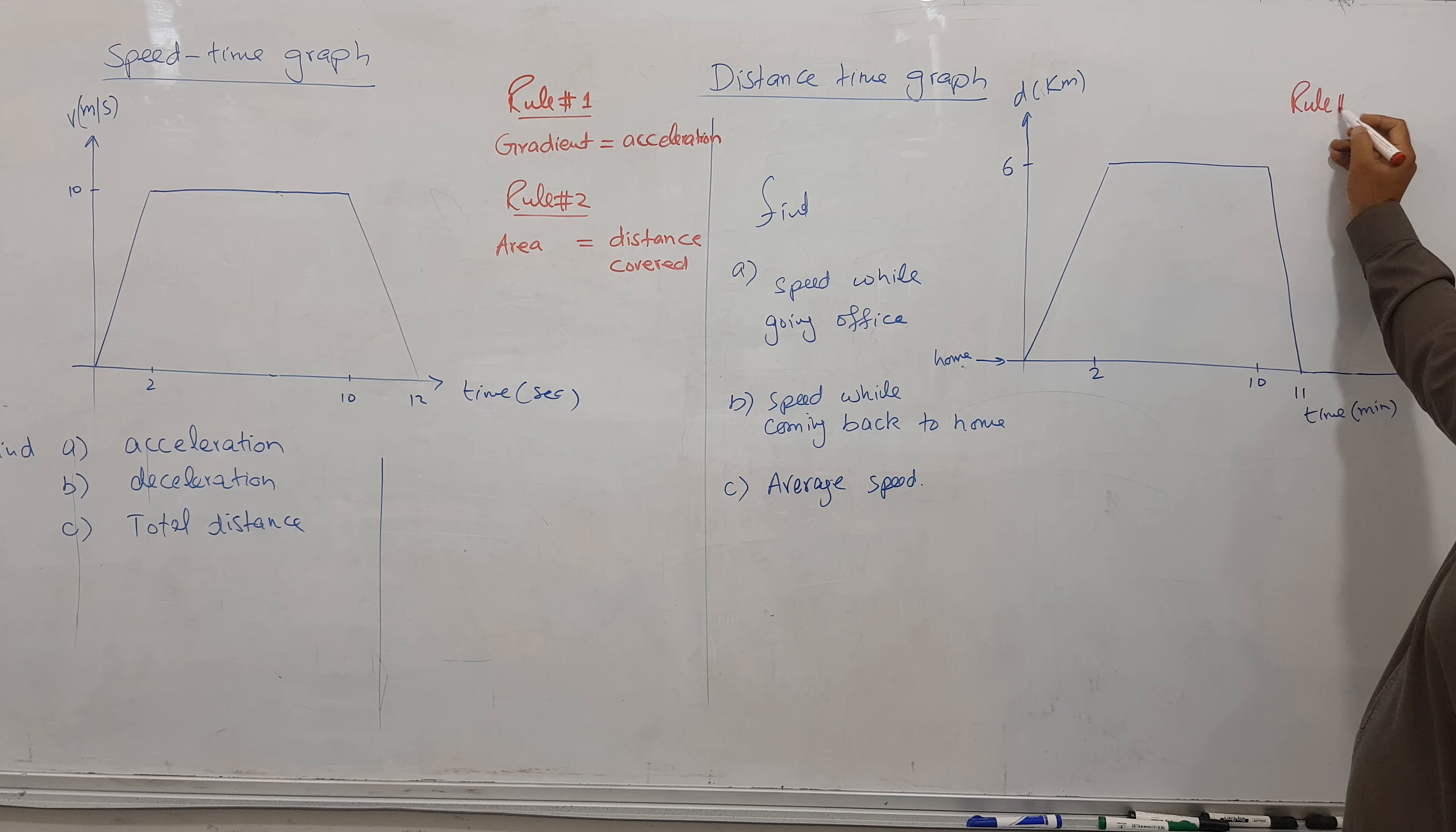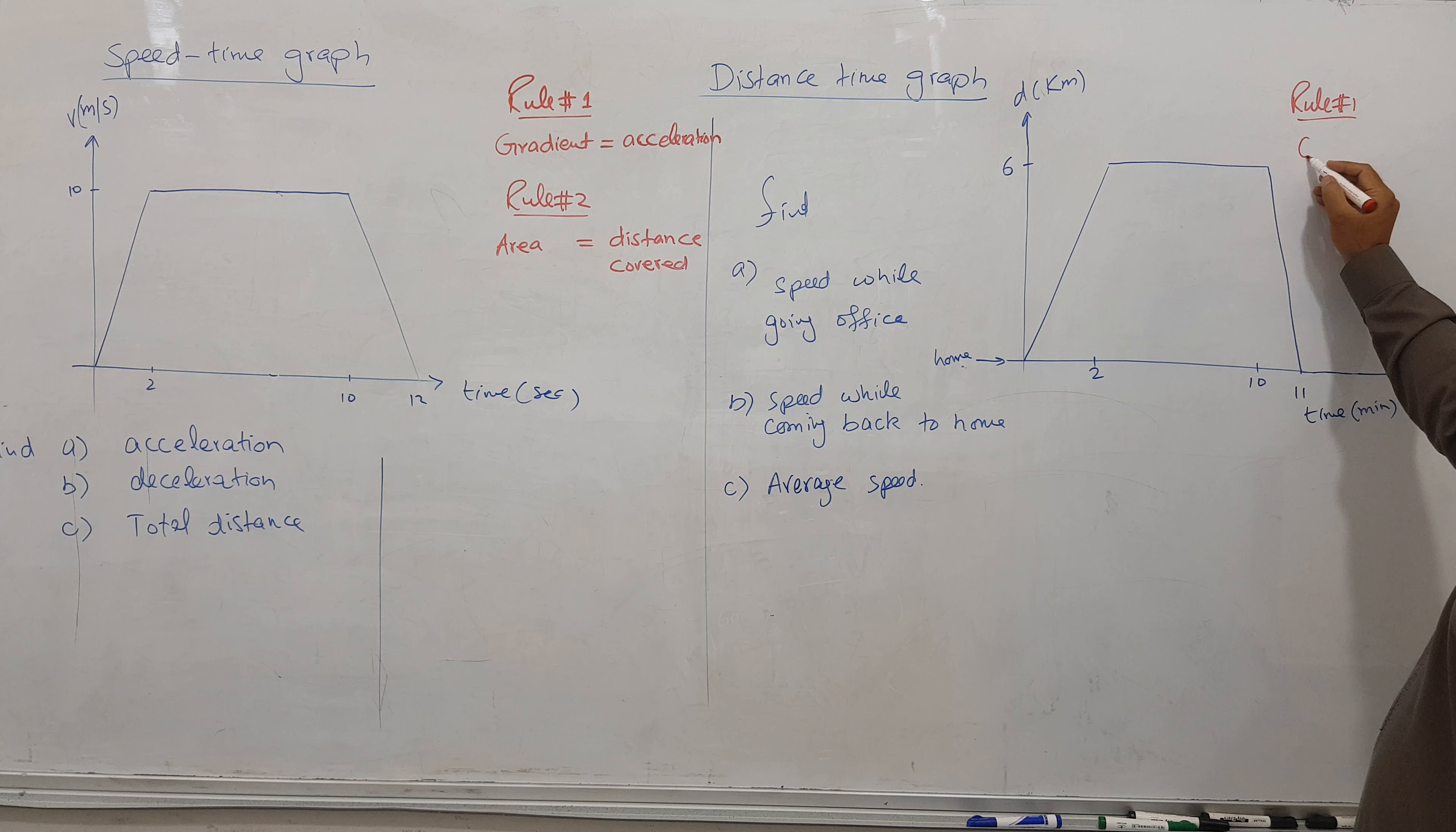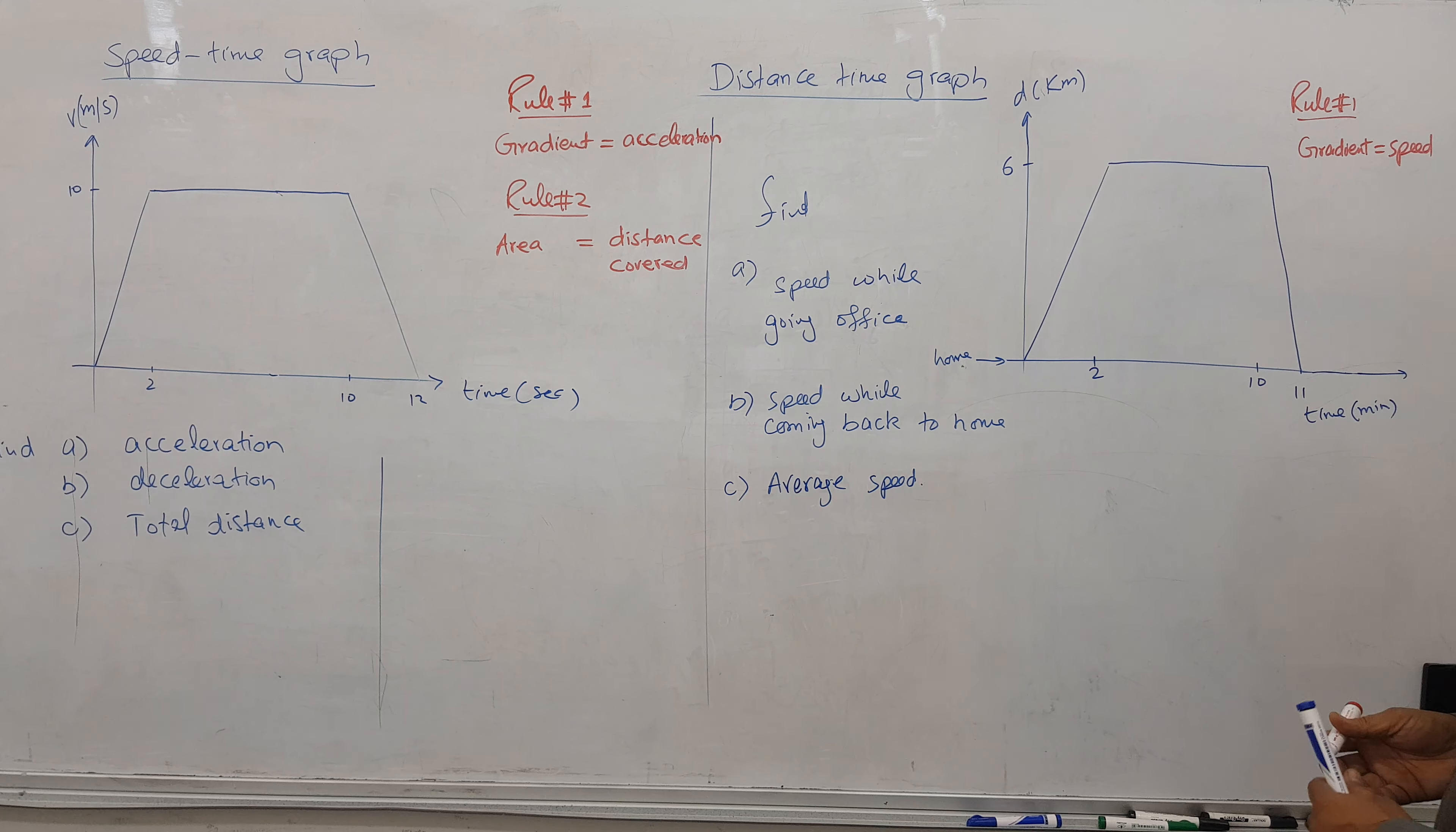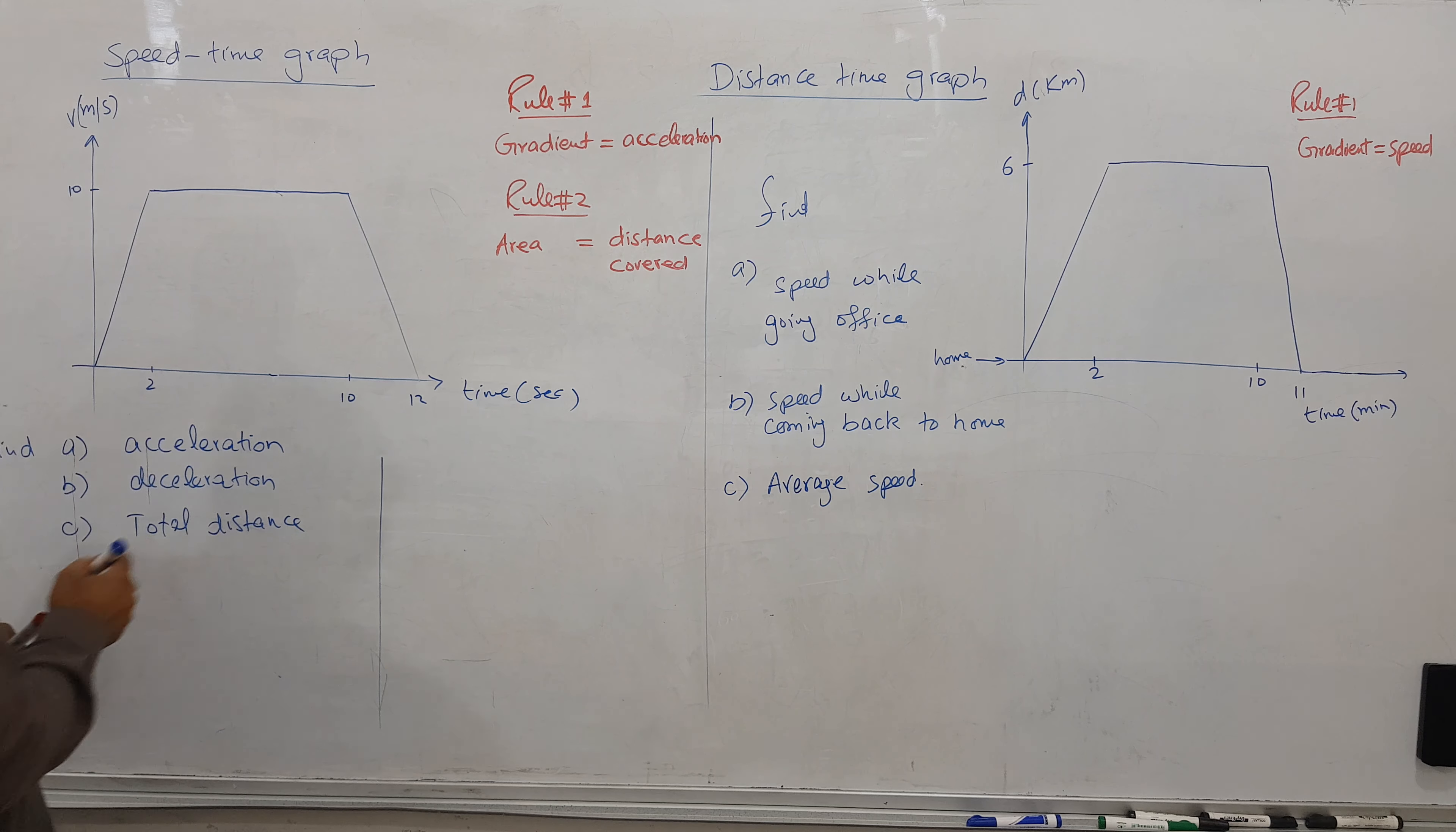For distance-time graphs, we have one rule only. The gradient represents speed. So we have two rules for speed-time and one rule for distance-time. Let's follow the plan.